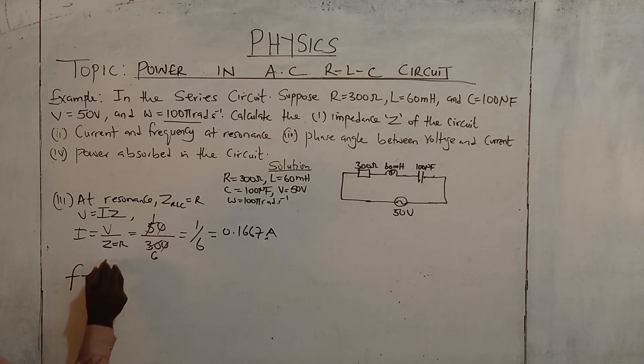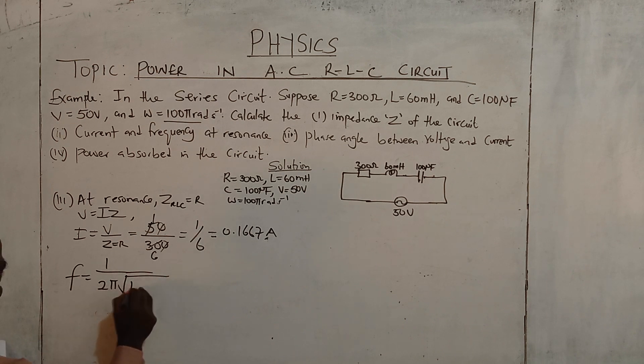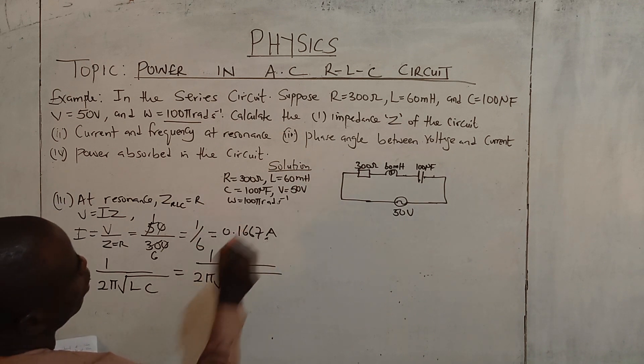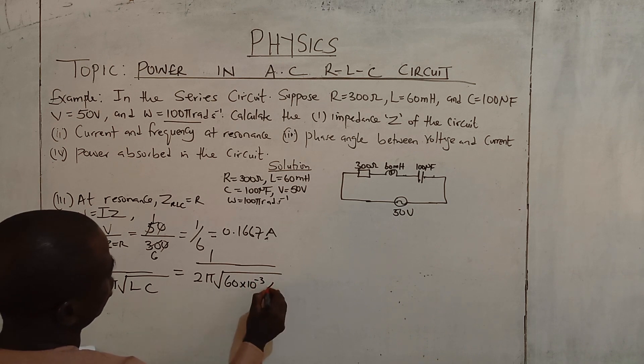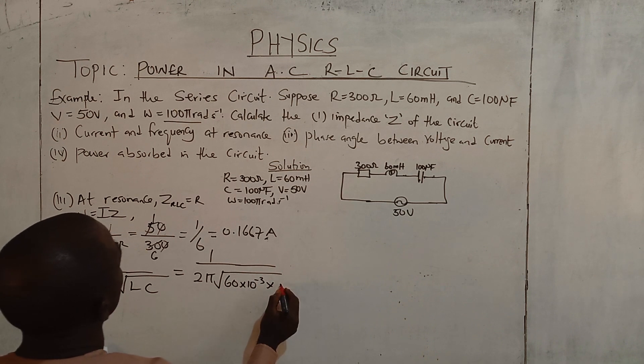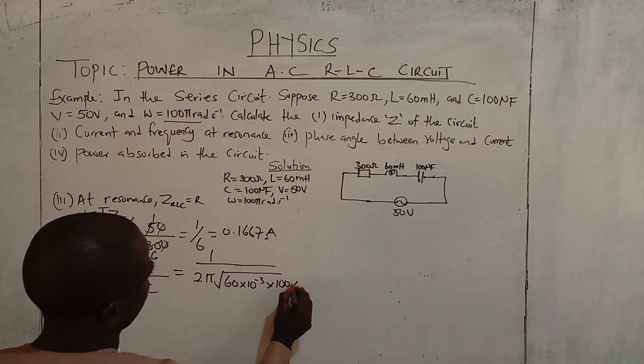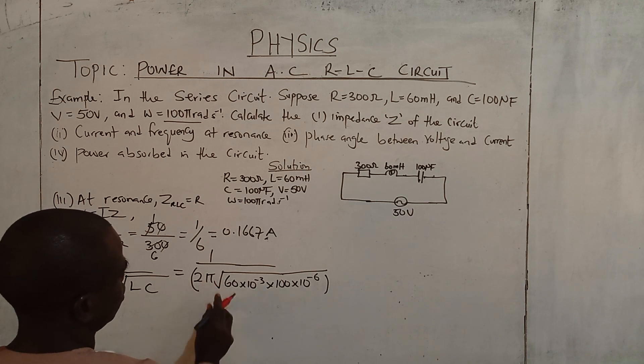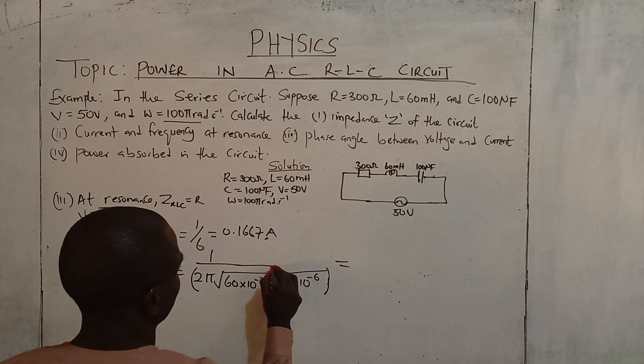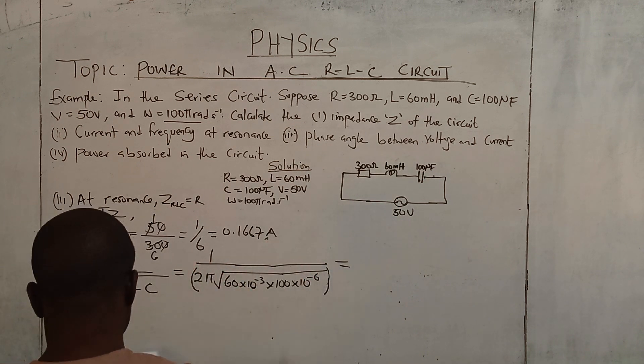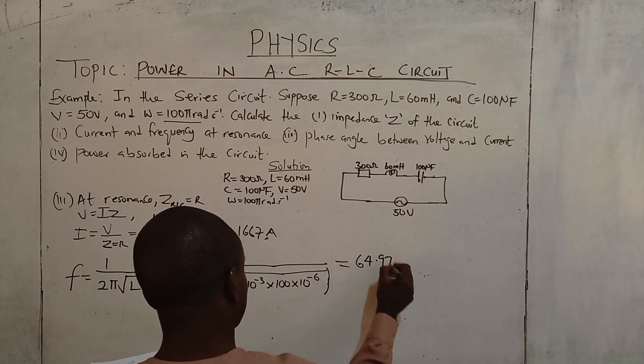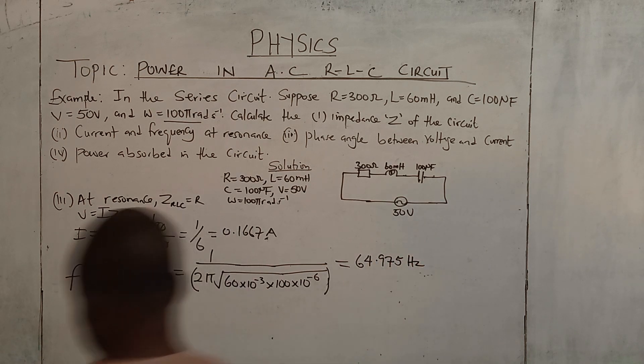You have to look for frequency at resonance. Formula for frequency at resonance f equals 1 over 2π square root of LC. L is 60 times 10 to the power minus 3, multiplied by C, 100 times 10 to the power minus 6. We are going to have 64.975 Hz frequency.